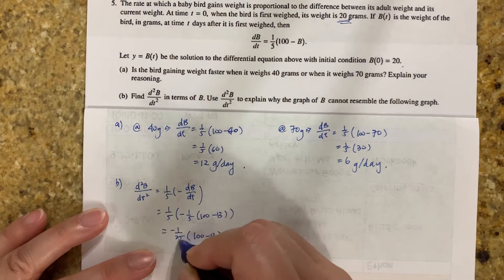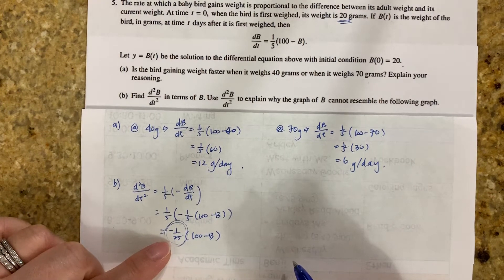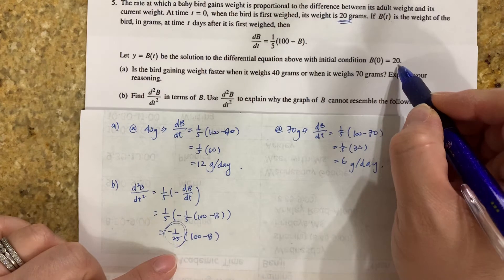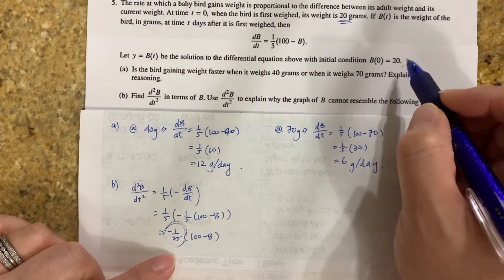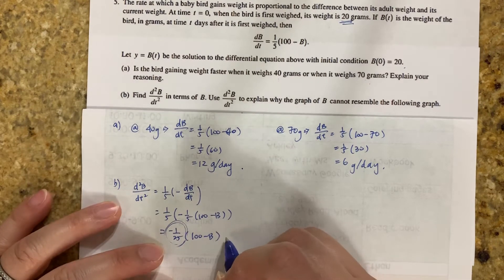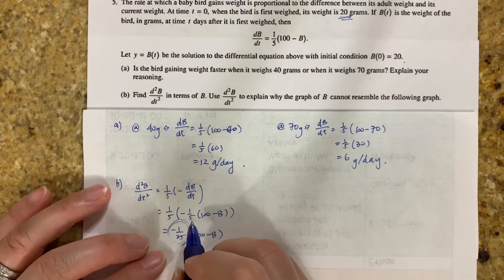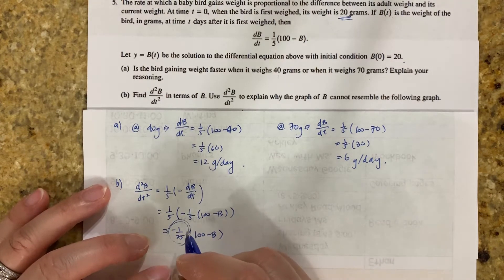So what does this say? This says no matter what it is, it is going to be negative. And the initial weight is 20 pounds or 20 grams. And it can only grow up to 100 because 100 minus 100 is 0. So it's really between 20 to 100. So this is always going to be a positive value. This is always going to be a negative value. Hence, making my second derivative always negative.